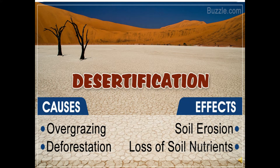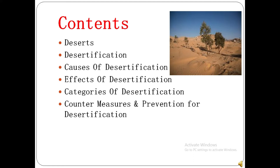In this lecture we will talk about the topic desertification. In the last lecture we discussed deforestation, and one of the consequences of deforestation is desertification. We will talk about its causes and effects. Its causes include overgrazing and deforestation, and its main effects include erosion of the soil and loss of soil nutrients. The main contents include deserts, what is desertification, causes and effects, categories or types of desertification, and finally counter measures and prevention for desertification.